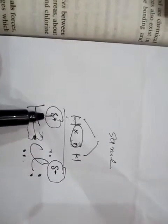Is attraction ke nateeje mein is bond mein polarity arise ho jaati hai. Yeh partial negative pole hai aur yeh partial positive — aur yeh interaction jo hai, dipole-dipole interaction kehlata hai. Ab hum apne answer ki taraf aate hain. Humara question hai...